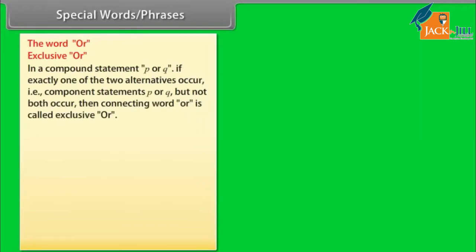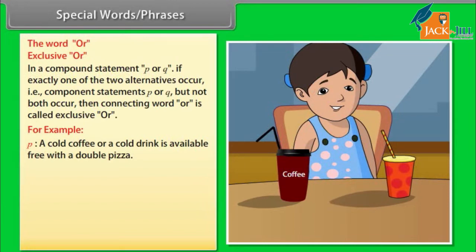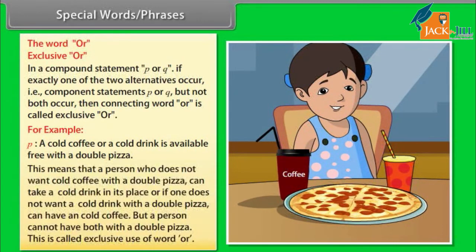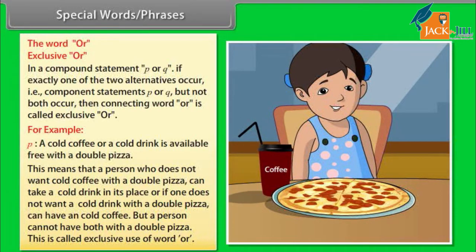In a compound statement P or Q, if exactly one of the two alternatives occurs — that is, component statements P or Q but not both — then the connecting word OR is called exclusive OR. For example, P is a statement that a cold coffee or a cold drink is available free with a double pizza. This means a person cannot have both with a double pizza. This is called the exclusive use of the word OR.